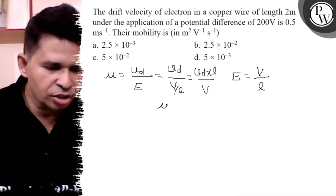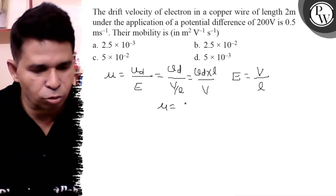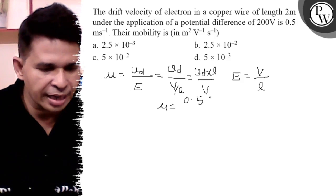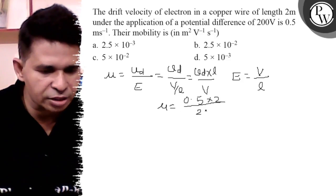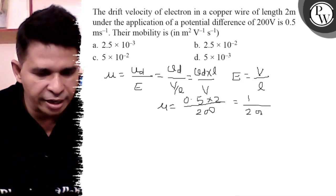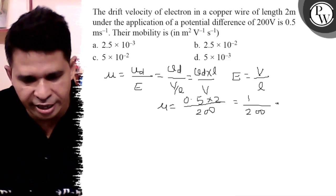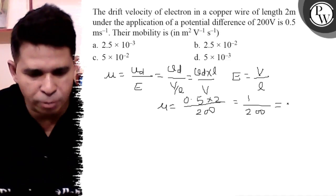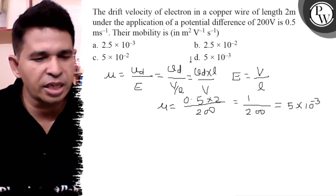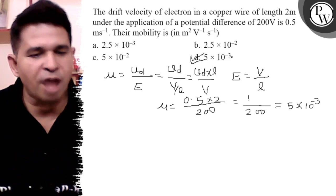Putting these values from the question: drift velocity is 0.5, length is 2 meters, and potential difference is 200 volts. So μ = (0.5 × 2)/200 = 1/200 = 5 × 10^-3. The answer is option D: 5 × 10^-3.